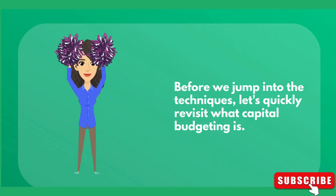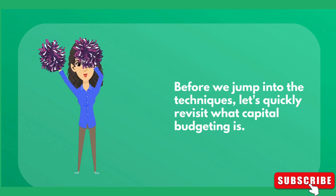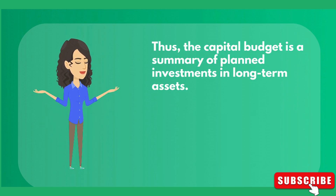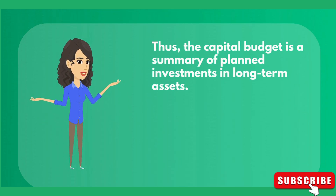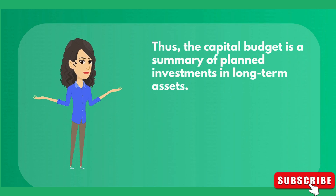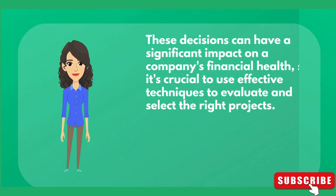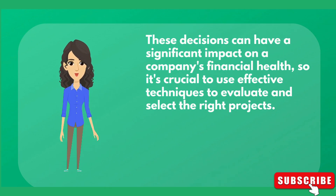Before we jump into the techniques, let's quickly revisit what capital budgeting is. Capital refers to long-term assets used in production, while a budget is a plan that outlines projected expenditures during some future period. Thus, the capital budget is a summary of planned investments in long-term assets, and capital budgeting is the whole process of analyzing projects and deciding which ones to include in the capital budget. These decisions can have a significant impact on a company's financial health, so it's crucial to use effective techniques to evaluate and select the right projects.